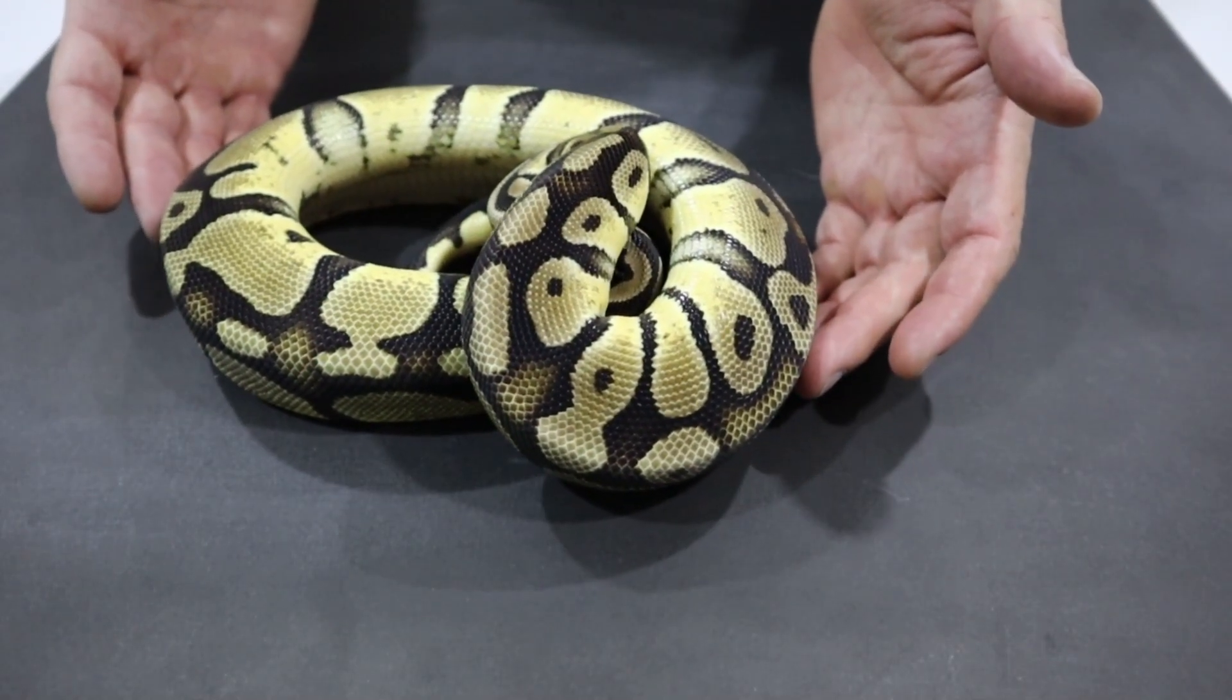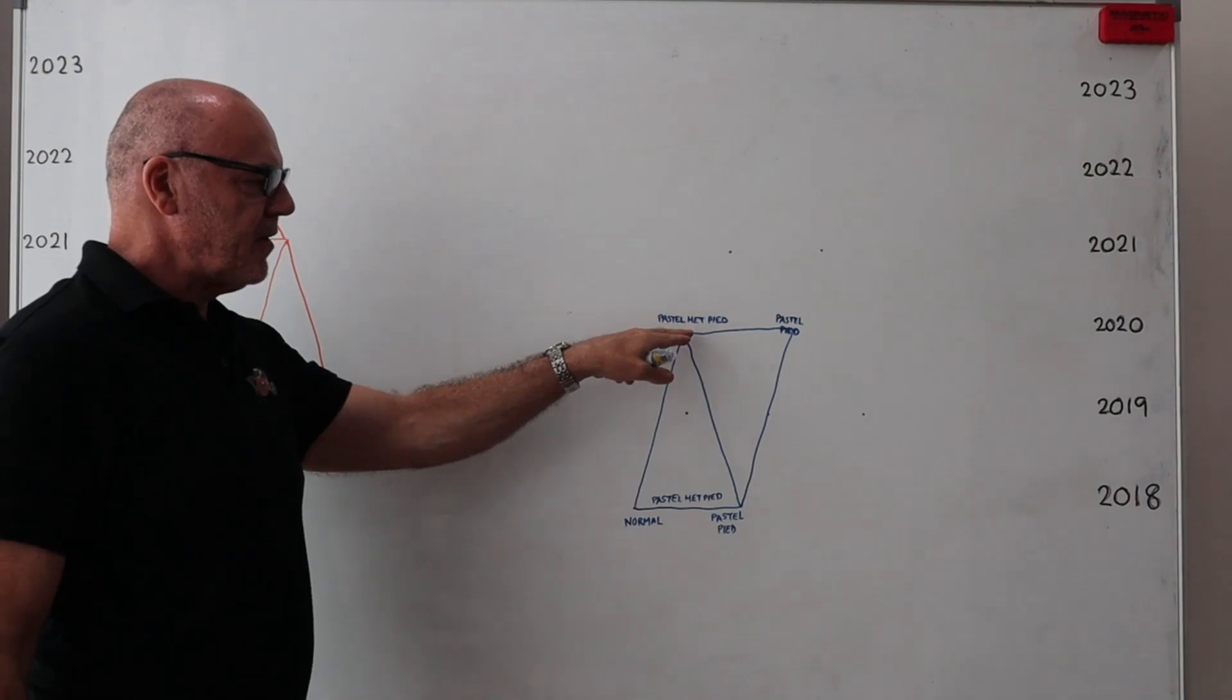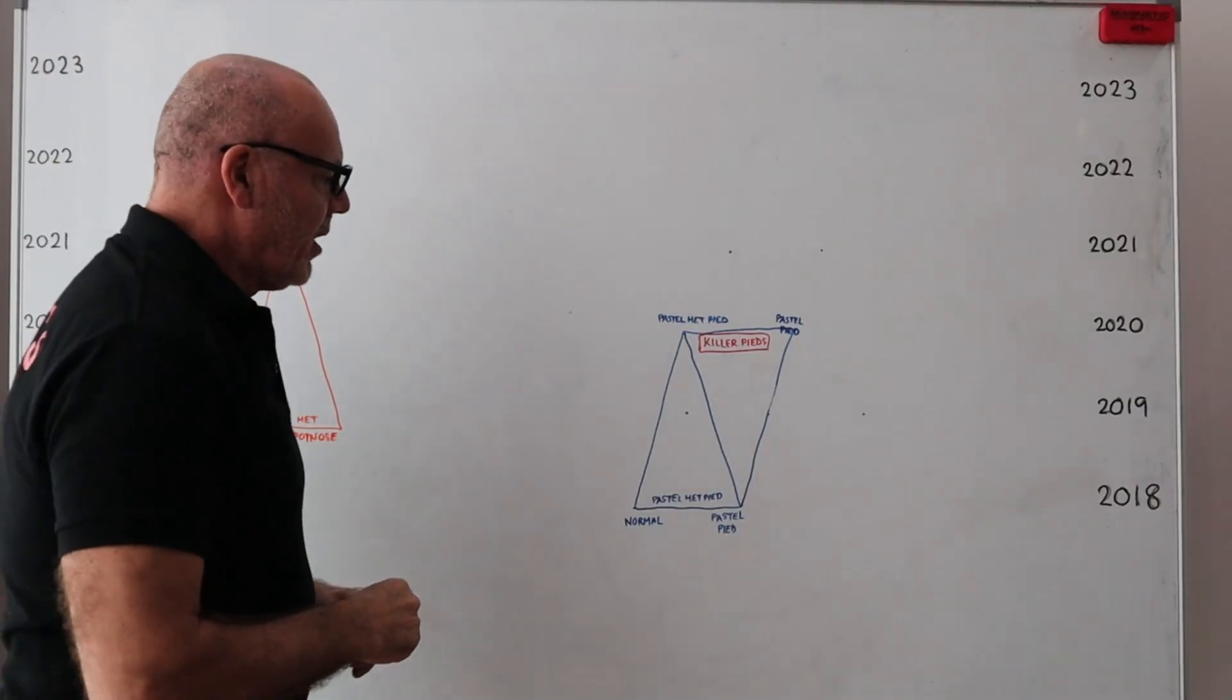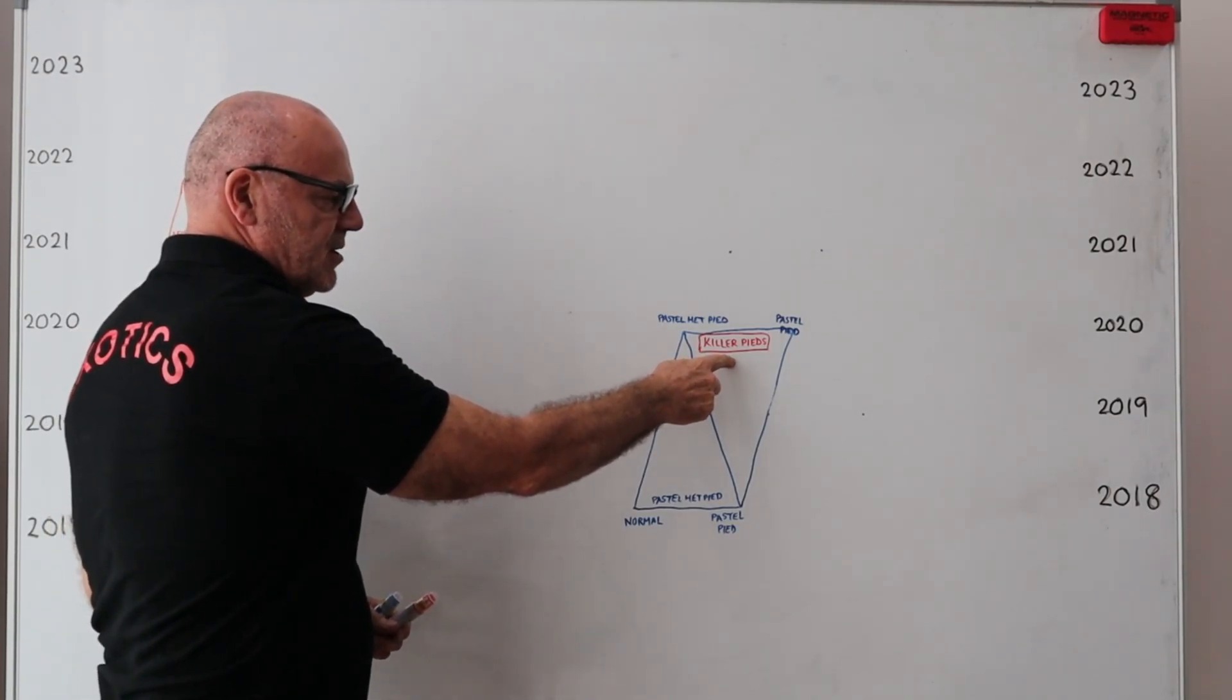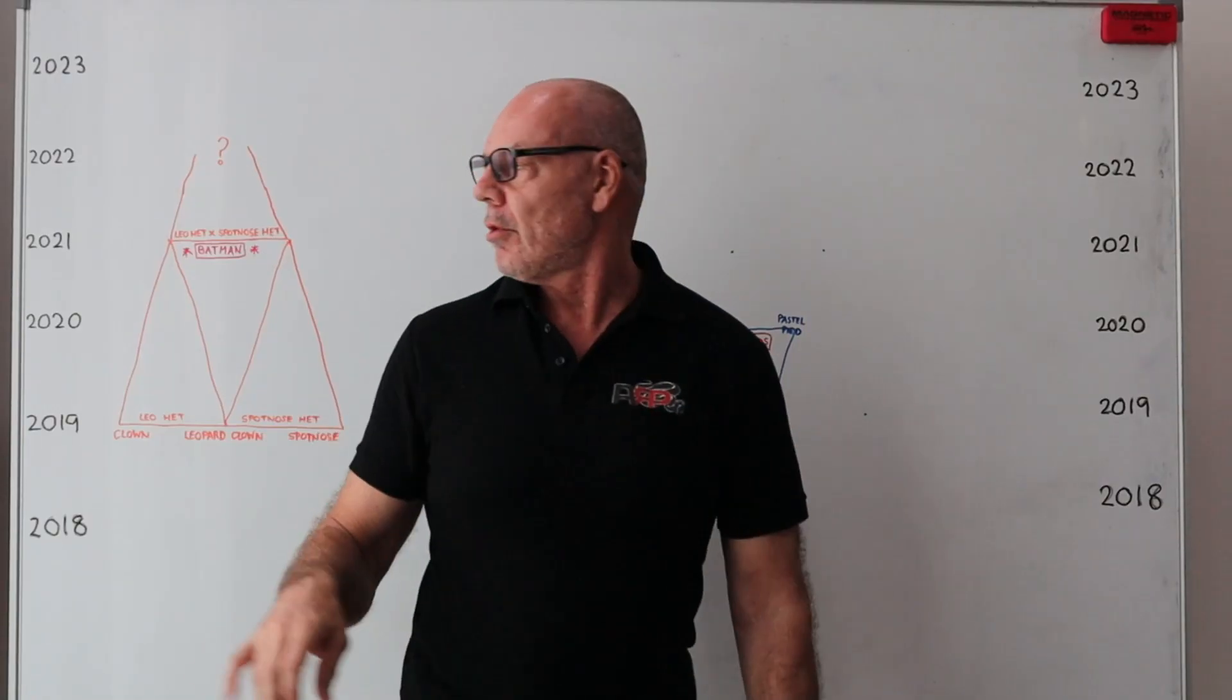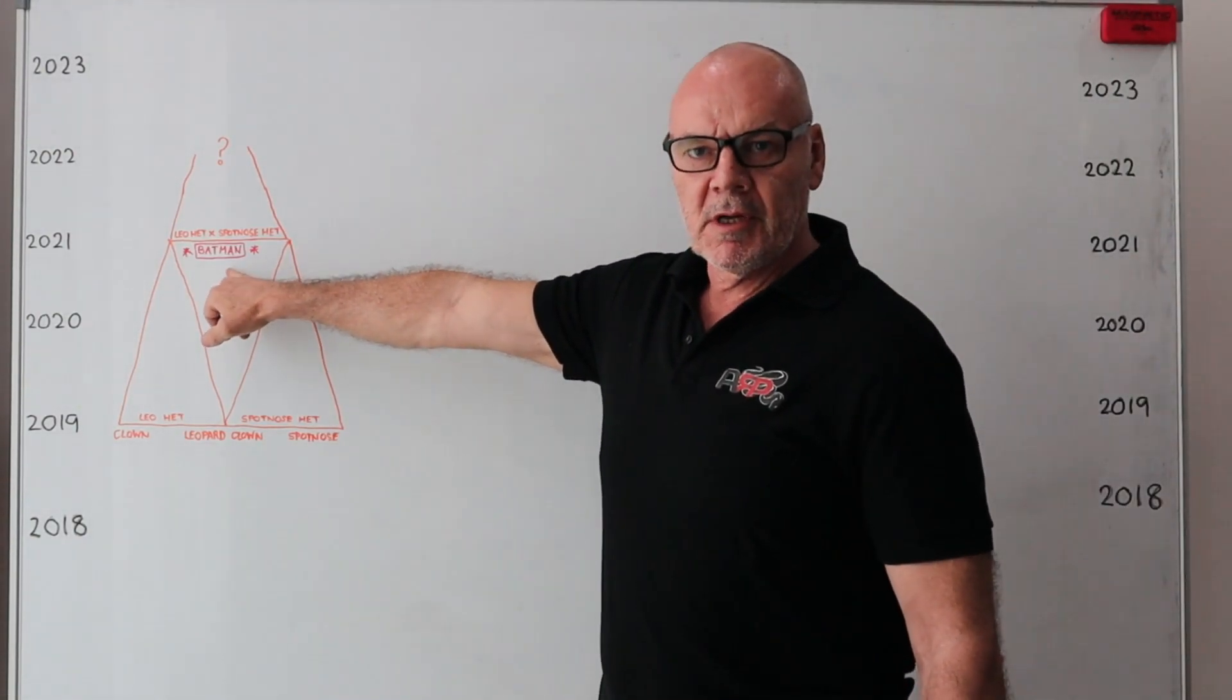In 2020, the pastel het pied females will be ready to breed back to the same pastel pied male, and that will give me one of my other goals, which is the killer pied or the super pastel pied visuals. So in 2020 I reach this goal. We already saw the Batman in 2021. So you can see here 2020 killer pieds, 2021 the Batman.